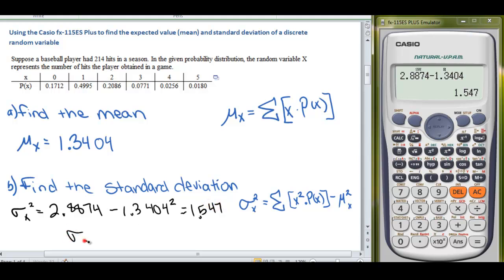Our standard deviation of that variable is going to be the square root of that. So the square root of 1.547, which is 1.24378. So 1.24, and we'll go to three decimal places, 1.244.